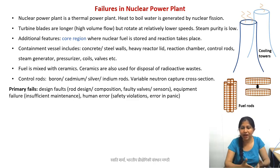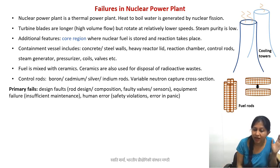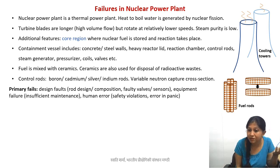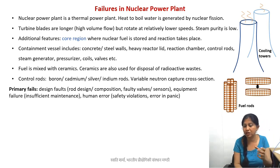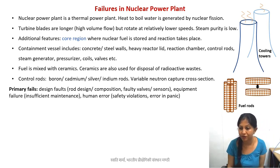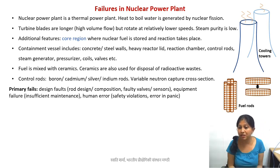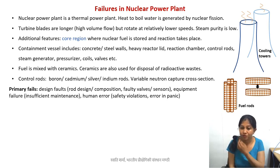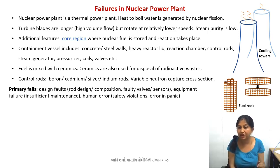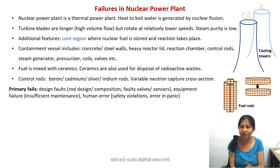Coming to the failures, the primary failures can be divided into: first, design faults. Design faults can include rod design and manufacture — for example, if rods are made such that they end up having certain cracks, or the uranium is not well distributed in the rod, that can cause failure later on. Similarly, with so many valves and sensors in the system, a faulty valve or a sensor not giving proper output — for example, an alarm that should turn on when pressure is below a certain limit not working — can lead to disaster. These all come under design faults.